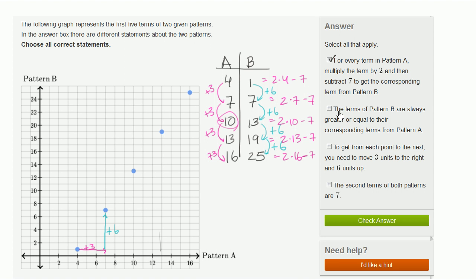Now let's look at the second one. The terms of pattern B are always greater than or equal to their corresponding terms from pattern A. Well, no, that's not right. It's true for a couple of scenarios. For the second, third, fourth, and fifth terms, pattern B is equal to or greater than pattern A. But for the first term, it's not true. Pattern A is greater. So this is not right.